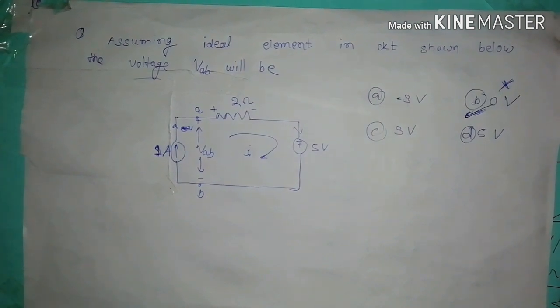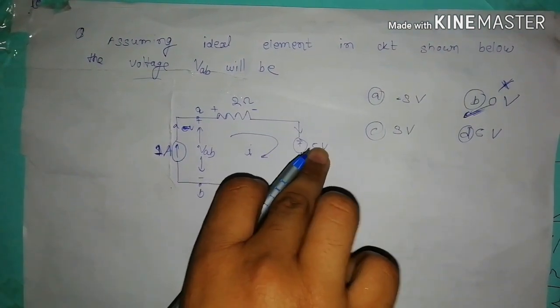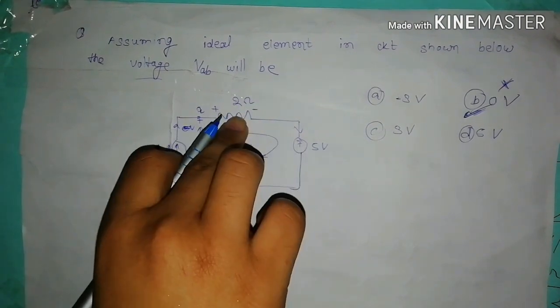So here I am applying the KVL equation. You can see here one voltage source, one current source, and one resistance.